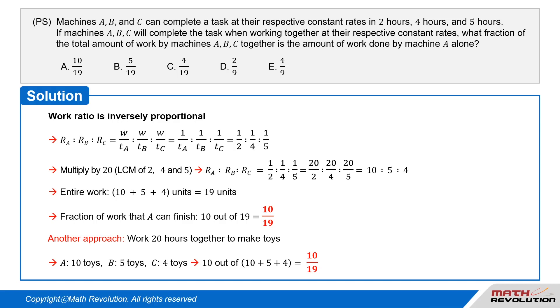Since A makes 10 out of 10 + 5 + 4 toys, 10/19 is the answer. You can solve the question like this. You can choose whatever method you like, but this one is easier. Thus, A is the correct answer.